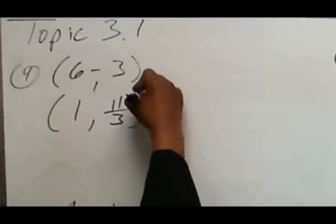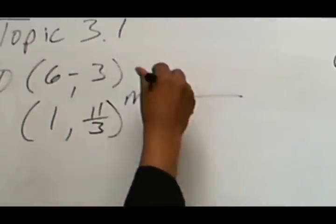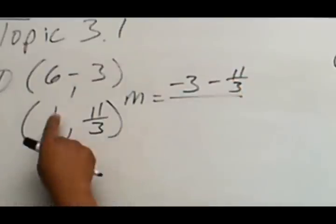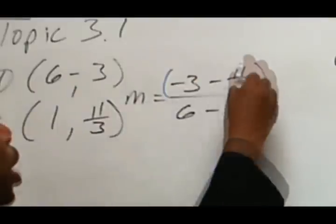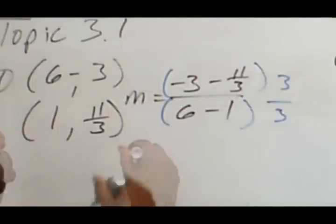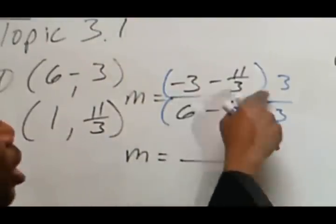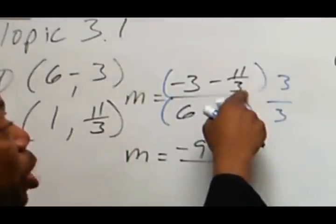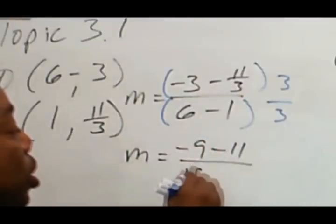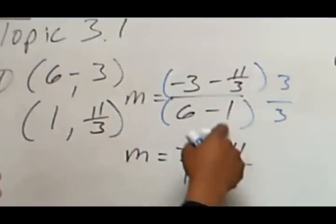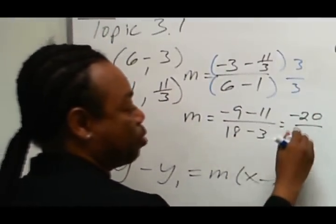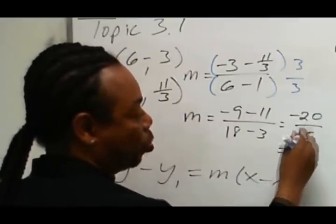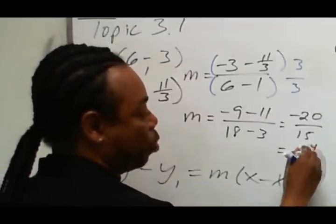Let's find the slope first. Slope will be: keep the negative 3, change this to negative 11 over 3. Keep this as 6, change this to a negative 1. Since we have a complex fraction, we look for the LCD, which is 3. Multiplying numerator and denominator by 3: 3 times negative 3 is negative 9; 3 divided by 3 is 1, times negative 11 is negative 11; 3 times 6 is 18; 3 times negative 1 is negative 3. Negative 9 and negative 11 become negative 20, and 18 and negative 3 become 15. We can reduce both by 5, so this gives negative 4 thirds.